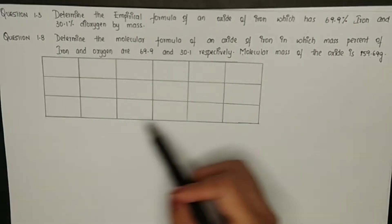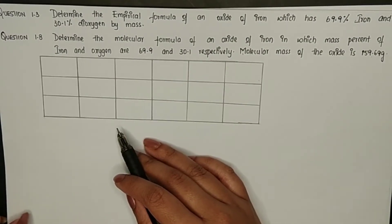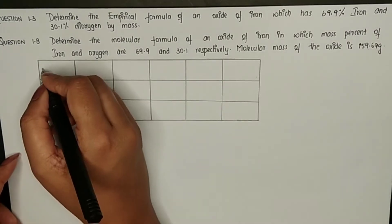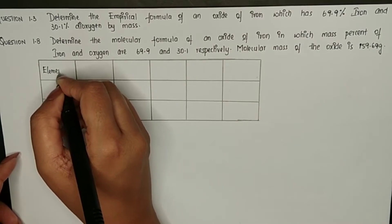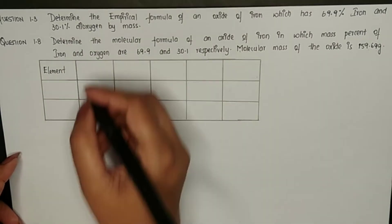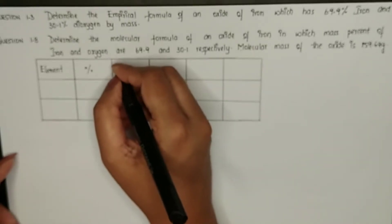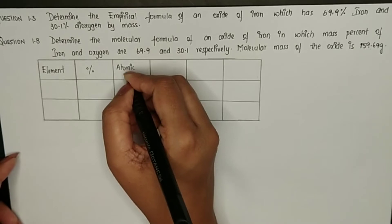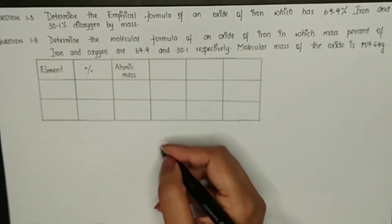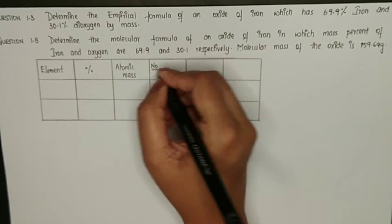I have drawn a box here that makes the calculation much easier. In the first column I am writing element, in the second one percentage, in the third column atomic mass, fourth column number of moles.